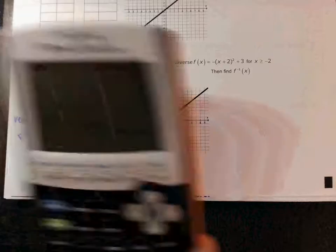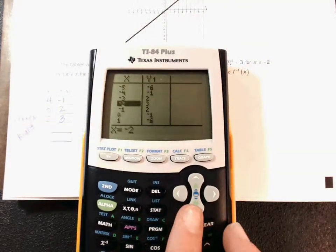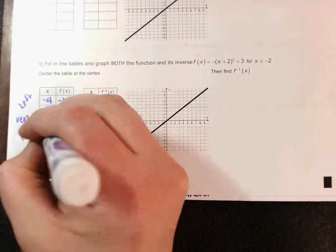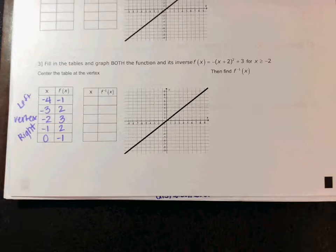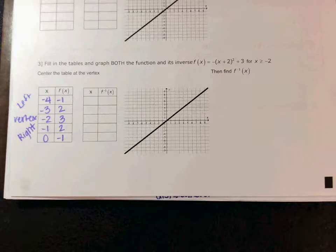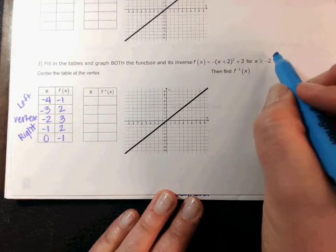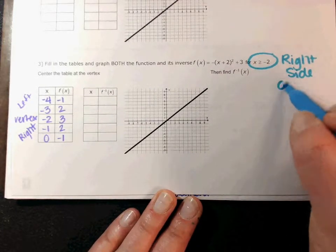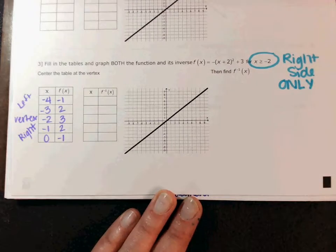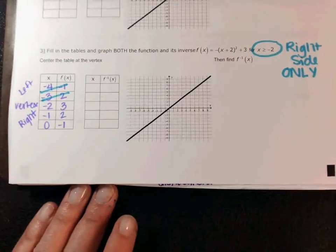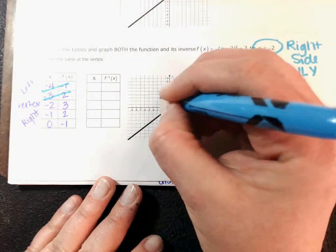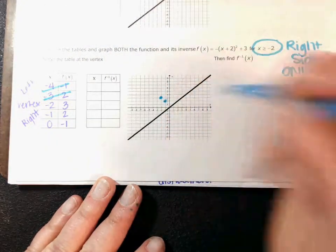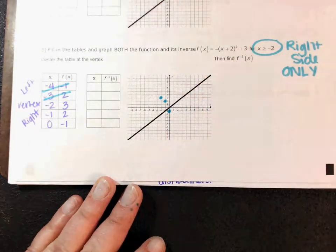Then on the other side, I'll put it back up here — it should be negative one, two below it, and zero, negative one. Negative one, two and zero, negative one. Then I'm about to graph, but I have to pick a side. Which side am I going to pick based on my x? This is the right side. So do I want the top points or the bottom points? The bottom points. So cross out the top two. So negative two, three is here; negative one, two is here; zero, negative one is here.